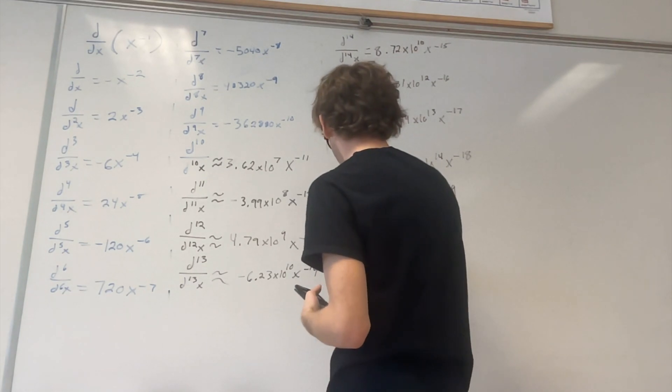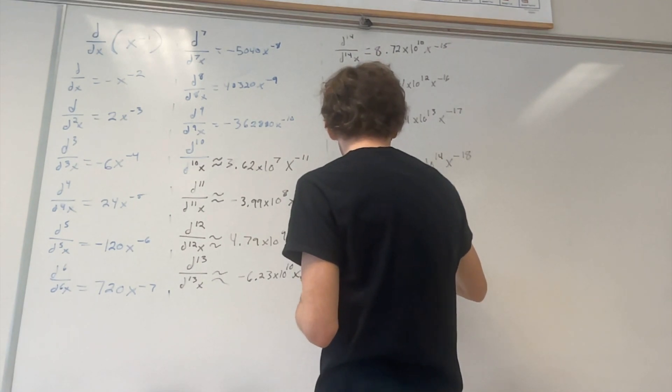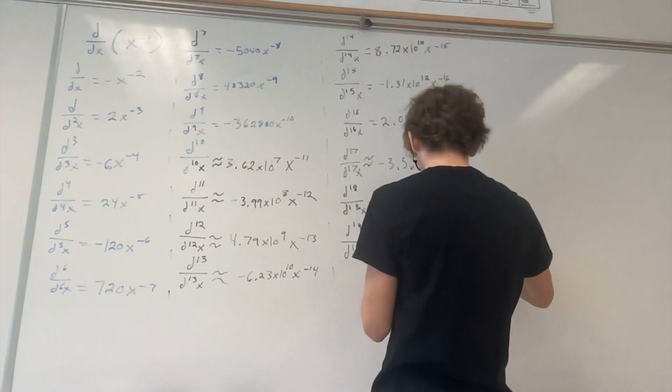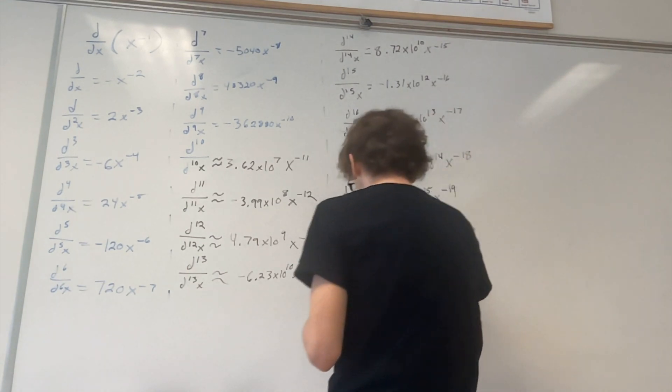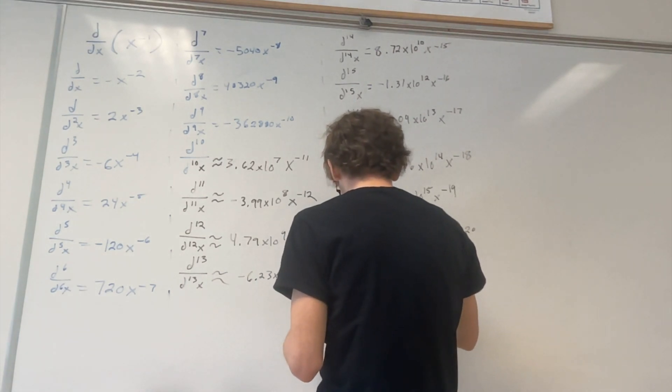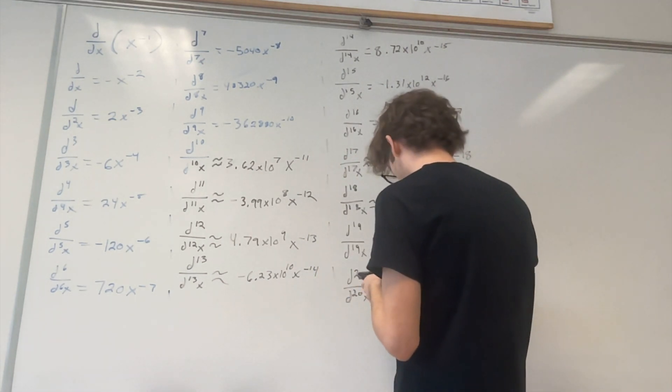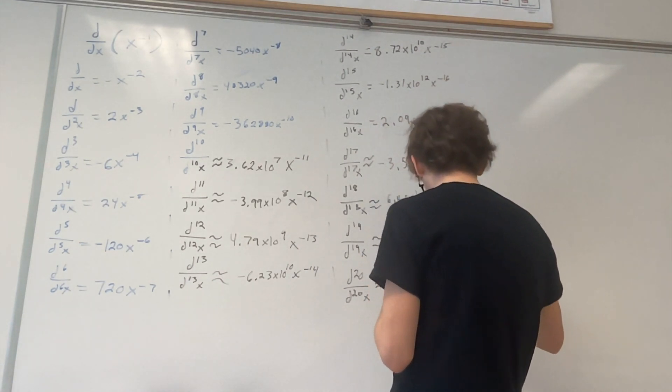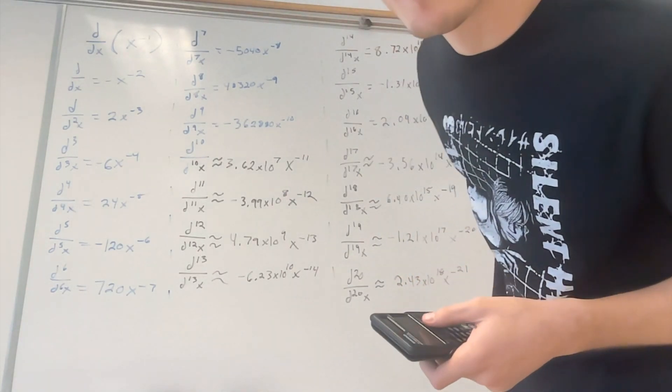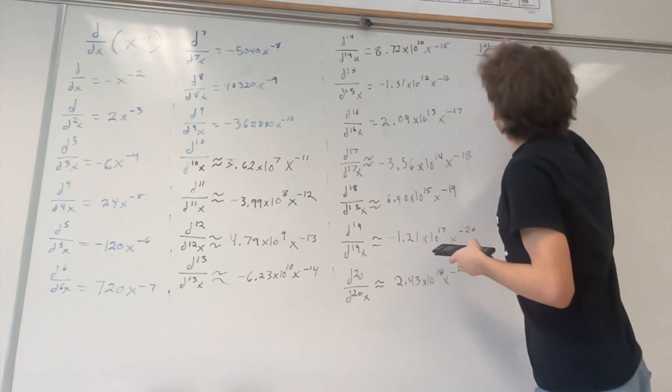The 16th derivative, 2.09 times 10 to the 13th, x to the negative 17th. The 17th derivative is 3.56 times 10 to the 14th, x to the negative 18th. The 18th derivative is roughly equal to 6.40 times 10 to the 15th, x to the negative 19th. The 19th derivative, negative 1.21 times 10 to the 17th, x to the negative 20th. Alright, we're at 20. We need to go 5 more. The 20th derivative, 2.43 times 10 to the 18, x to the negative 21. Last little row bit here. What am I looking on time? Oh, I can go further. I'm gonna go 30. Fuck that.